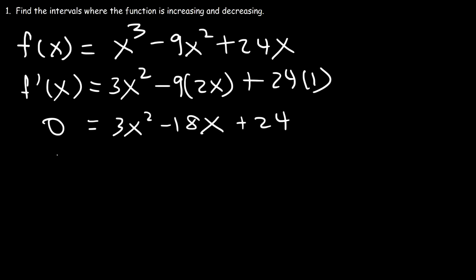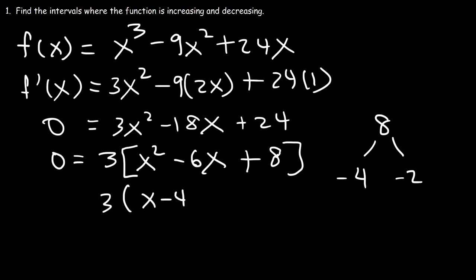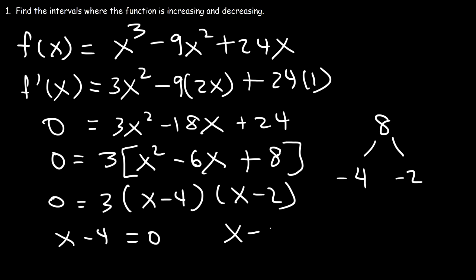Let's begin by factoring out the GCF which is 3. 3x squared divided by 3 is x squared, negative 18x divided by 3 is negative 6x, and 24 divided by 3 is 8. We need to factor this trinomial: what two numbers multiply to 8 but add to negative 6? Negative 4 and negative 2 multiply to positive 8 and add to negative 6, so it factors as (x minus 4)(x minus 2). Setting each factor equal to 0 gives us two critical numbers: x equals 4 and x equals 2.